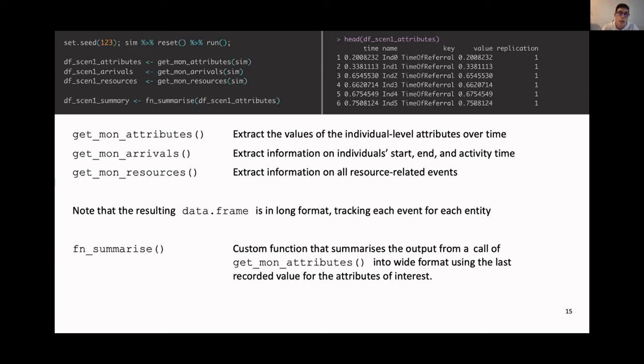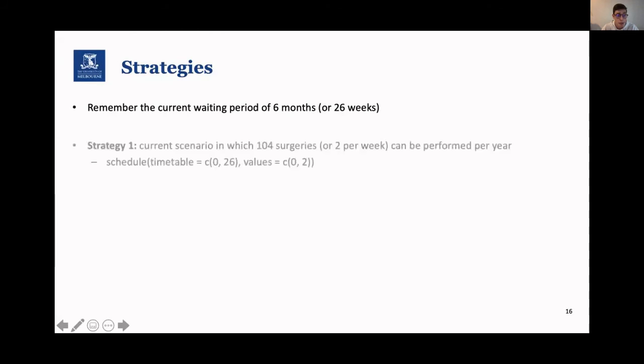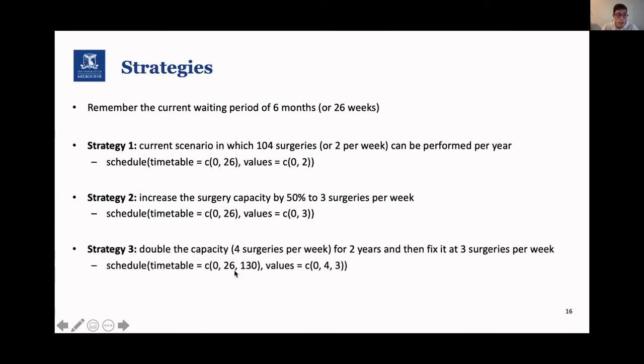Let's have a look at what it then looks like for our case study. Remember our strategies. We had a waiting period of six months. This was the schedule for the surgery resource for strategy one. And for strategy two, we changed the two to three. And for strategy three, we doubled the capacity for the first two years. So it's four, and then after two and a half years, we put it to three.